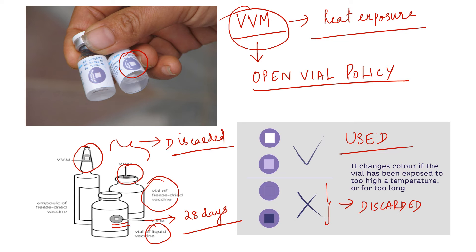All reusable vaccines are liquid vaccines, which can be used for the next 28 days if conditions apply — and they will have the VVM attached on the label of the vaccine vial. All non-reusable vaccines will have their vaccine vial monitor attached on the neck or cap of the ampoule, and they should be discarded at the end of the session or within six hours of opening the vial.